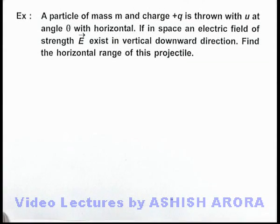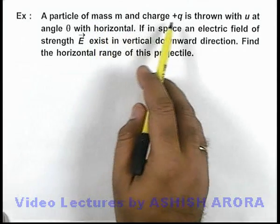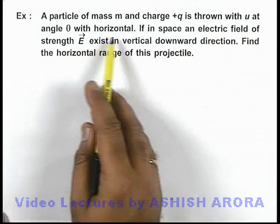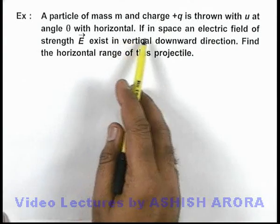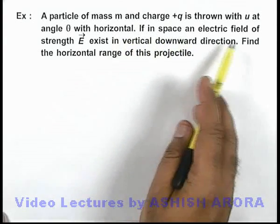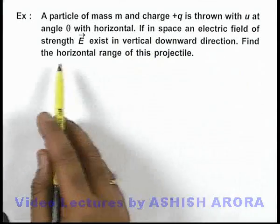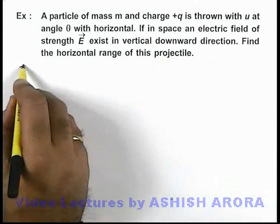In this example, we are given that a particle of mass m and charge +q is thrown with a speed u at an angle θ with the horizontal. If in space an electric field of strength E exists in vertically downward direction, we are required to find the horizontal range of this projectile.